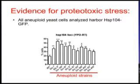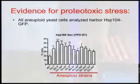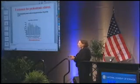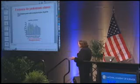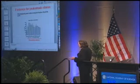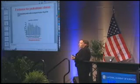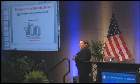Let me show you one piece of data supporting the idea that aneuploid cells are stressed due to protein composition issues. Here is a series of aneuploid yeast strains, each carrying one of several different chromosomes. We're looking at a marker for protein folding stress — a protein called HSP104 — which detects the consequences of proteotoxic stress. When cells experience proteotoxic stress, proteins form aggregates recognized by HSP104. In our aneuploid cells, the number of HSP104 foci is increased compared to euploid control cells.